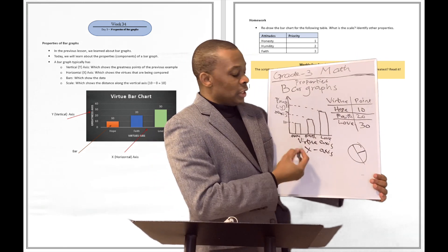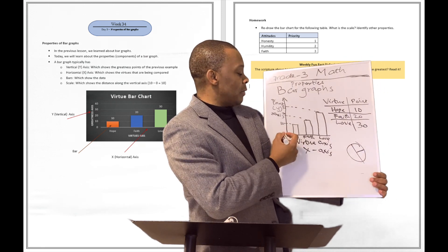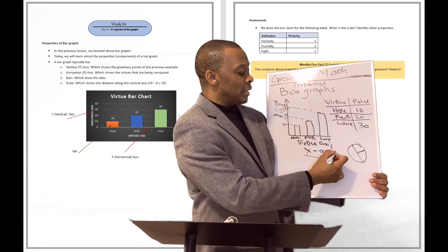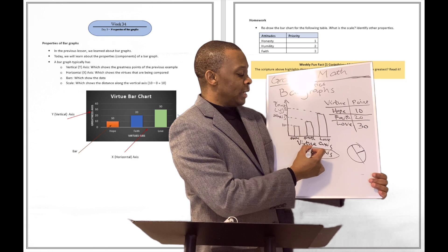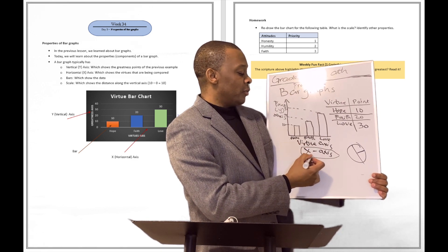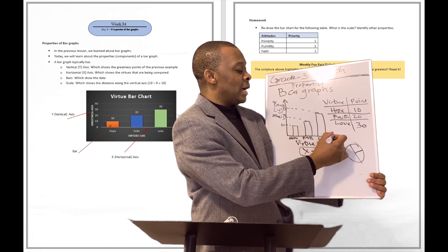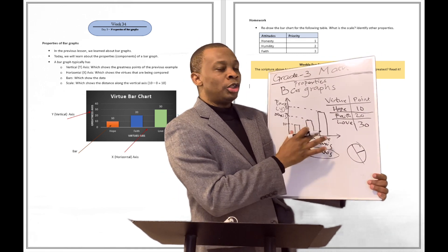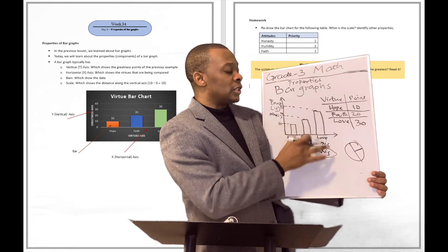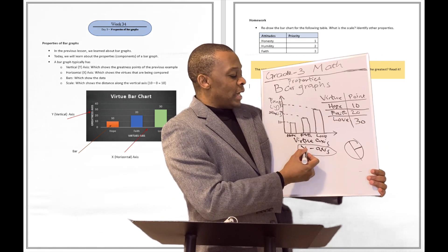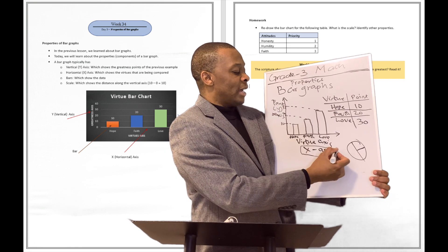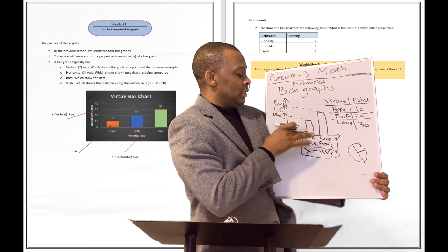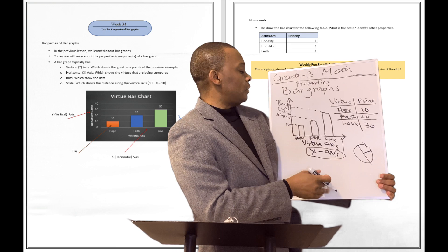There is a part of the bar graph that we call the x-axis. You've got to commit this to memory right now. The horizontal line on which the bars sit is called the x-axis. So this is the x-axis over here — that line over there, that's the x-axis.